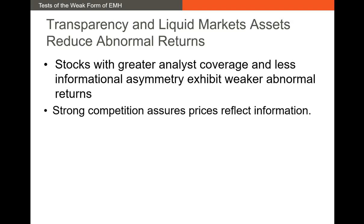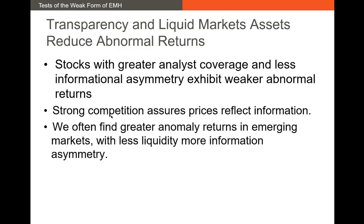Also, strong price competition allows the market price of a stock to reflect its fair value or intrinsic value. If a lot of investors are trading on a stock, it's more likely that the market price reflects the intrinsic value. A lot of these anomalous returns are much stronger in emerging markets where there's a lot less liquidity and more information asymmetry. Essentially, any place where there are fewer investors, less information, and it's easier to hide information — that's where we tend to see these anomalous returns crop up.